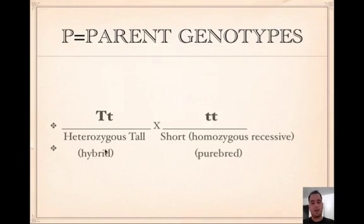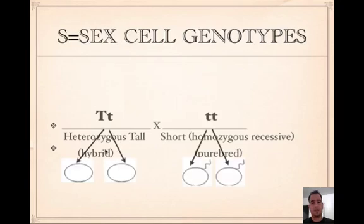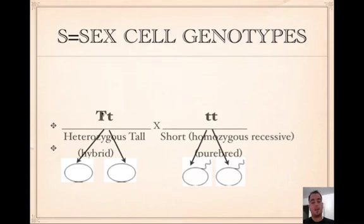The next step is to figure out the sex cell genotypes. If there's one gene, all you have to do is separate them. If there's two genes, then you do FOIL to figure out the sex cells. Here there's only one gene because we're only dealing with one letter, T. So we just separate — the law of segregation — and those are the sex cells.